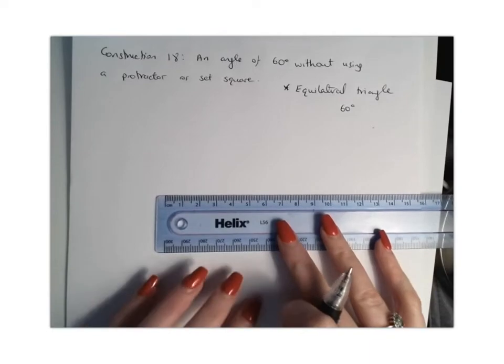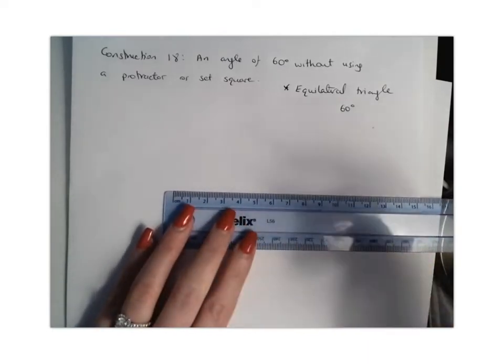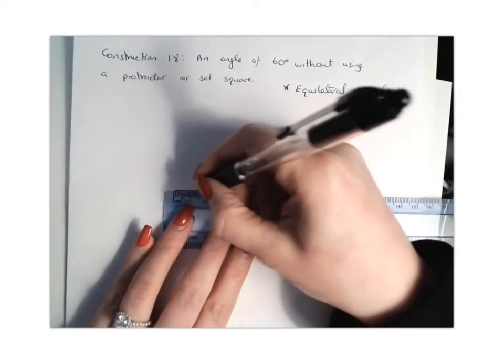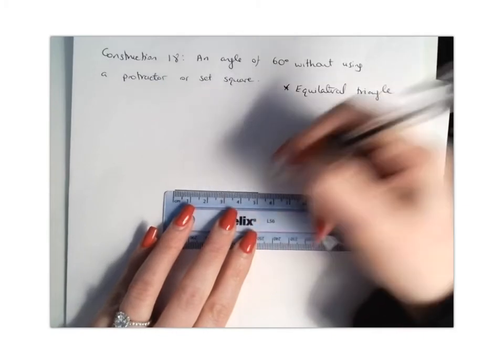So we're going to start off by drawing ourselves a line segment and it doesn't really matter what distance this is but let's say we'll say 5 centimetres.